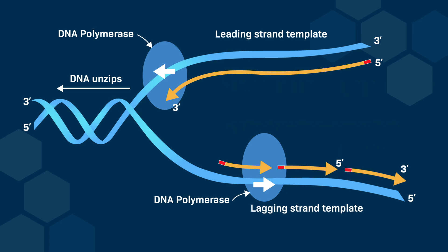For the leading strand, a single primer is needed for continuous synthesis, and this primer is synthesized at the origin of replication. For the lagging strand, multiple primers are required for discontinuous synthesis, with each Okazaki fragment starting from its own primer. Here is a quick overview of Okazaki primer synthesis.